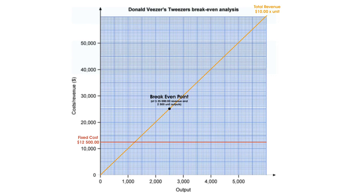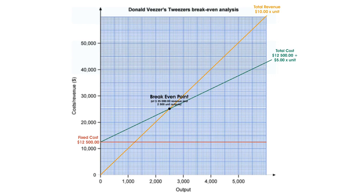Meanwhile, the function for total cost is fixed cost plus variable cost times quantity. This means that the line for total cost starts from the coordinate zero, twelve thousand five hundred, because when the quantity is zero, the total cost is the variable cost times zero plus fixed cost, which is twelve thousand five hundred. With the same reasoning, we can draw a line from the starting point and through the break-even point, as it also follows the same function. This creates our green line, labeled total cost.